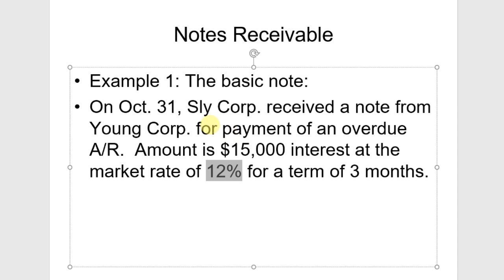Now in some instances we would count the number of days. Going from October 31 to December 31 — do not count October 31, do count December 31 — with 30 days in November and 31 in December, we would be looking at 61 days of interest accrual out of 365. But for simplicity we're just going to calculate interest for the full note and then look at what two months looks like.